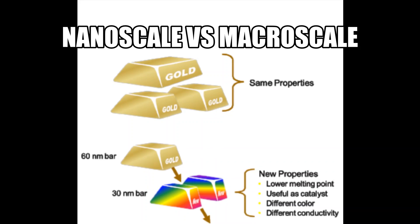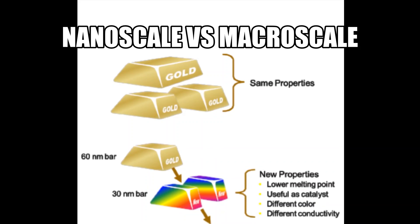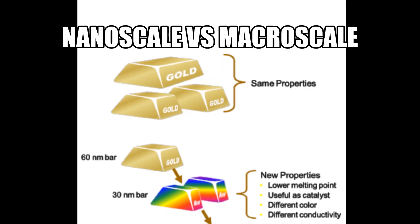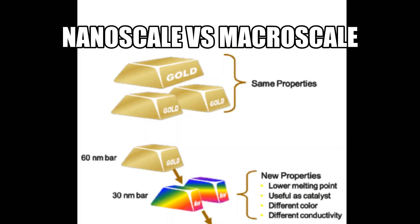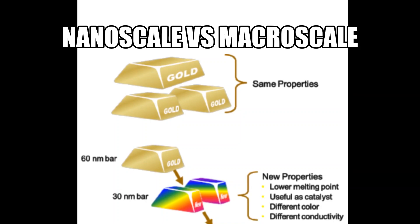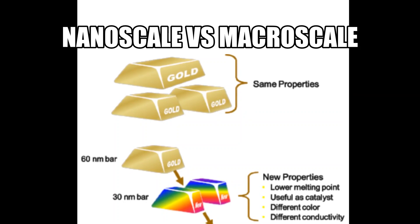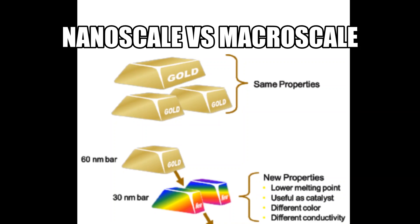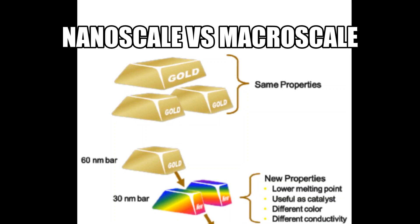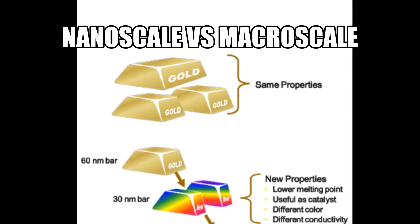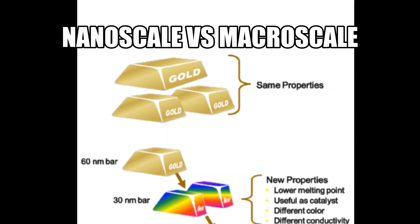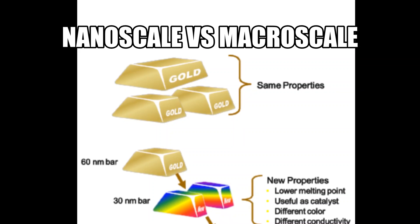It is important to recognize that matter exhibits unusual physical, chemical, and biological properties on the nanoscale, meaning that a material's nanoscale properties can be different from its macroscale properties. For example, gold — differences can be found comparing it under different sizes. Some nanostructure materials are also stronger or have different properties compared to other forms or sizes of the same material.